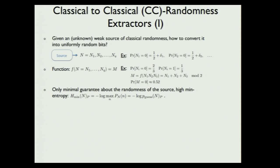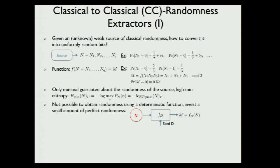The meaningful measure here is the min entropy, defined as minus the logarithm of the maximum of the probability distribution, which I also write as the optimal guessing probability of guessing the random variable, because this can then be generalized to a more general setting. We want to find a function that works if we only know something about the min entropy, and it turns out this is not possible using deterministic functions — we have to invest a small amount of perfect randomness as a seed.